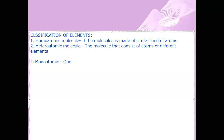Homoatomic diatomic molecules contain two atoms of the same kind. Homoatomic triatomic molecules contain three atoms of the same kind. And homoatomic polyatomic molecules contain more than three atoms of the same kind.